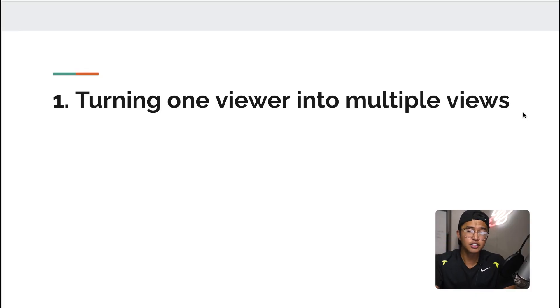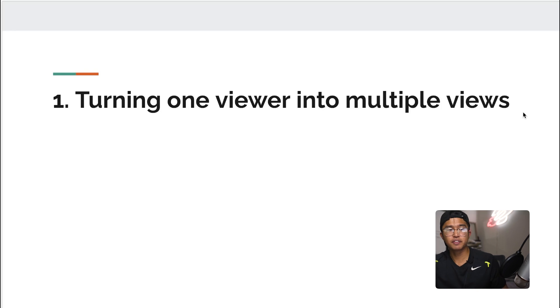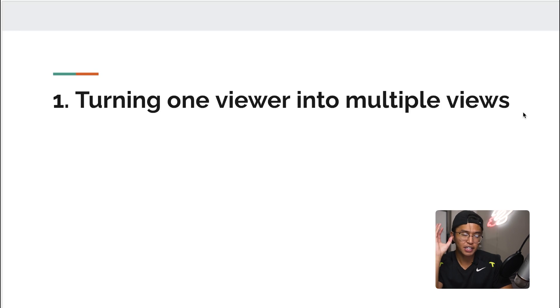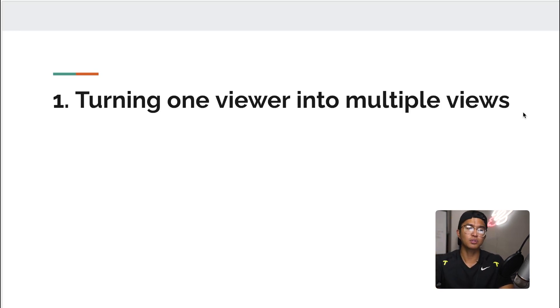The first thing that a lot of people fail to understand is that you can turn one viewer into multiple views. When you and I watch YouTube videos, we watch more than one video around the same topic. If I'm looking at the newest iPhone 14, I don't just watch a single review — I watch a lot of videos surrounding the iPhone 14. So you have an individual watching multiple videos surrounding the same topic. How can you turn one viewer into multiple views?